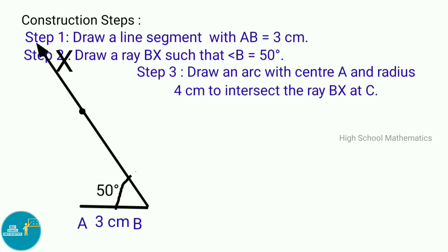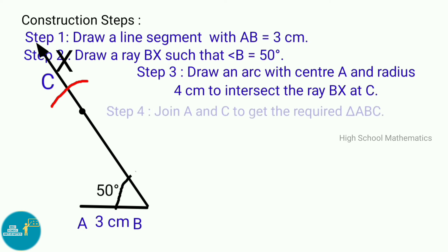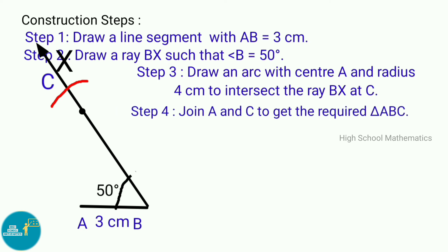Step 3: Draw an arc with center A and radius 4 centimeters to intersect ray BX at C. Step 4: Join A and C to get the required triangle ABC.